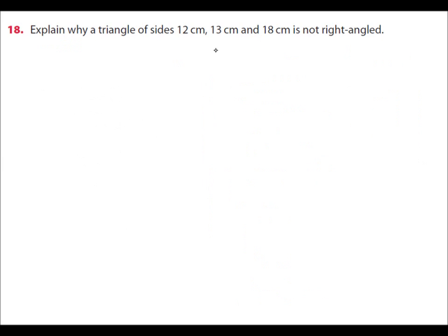And here we have our last example, example 5. Explain why a triangle with sides 12, 13, and 18 is not a right-angled triangle. Well, it's back to our friend Pythagoras. If it is a right-angled triangle, it must obey Pythagoras' theorem.